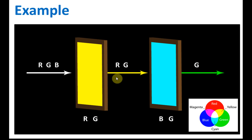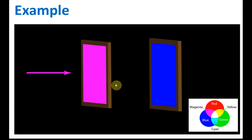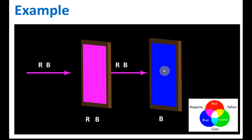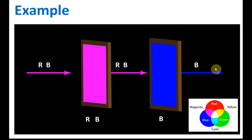Another example: a magenta filter combined with a blue filter, and the light coming in is magenta. Magenta is the combination of red and blue, so red and blue are allowed to pass through the magenta filter, combining to form magenta. When they then move towards the blue filter, only blue is allowed to pass through — red is blocked. Therefore the color that passes through both filters is blue.